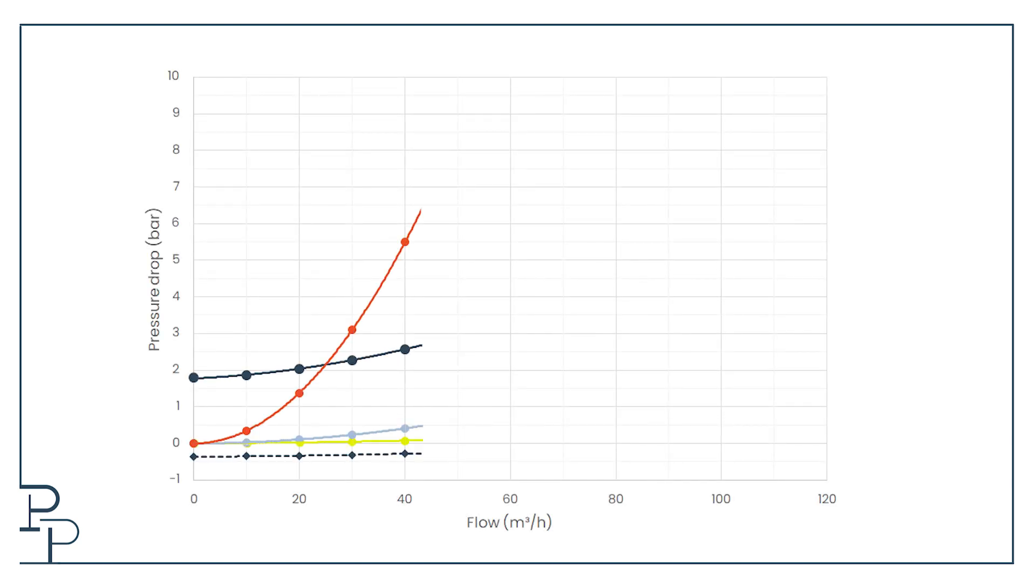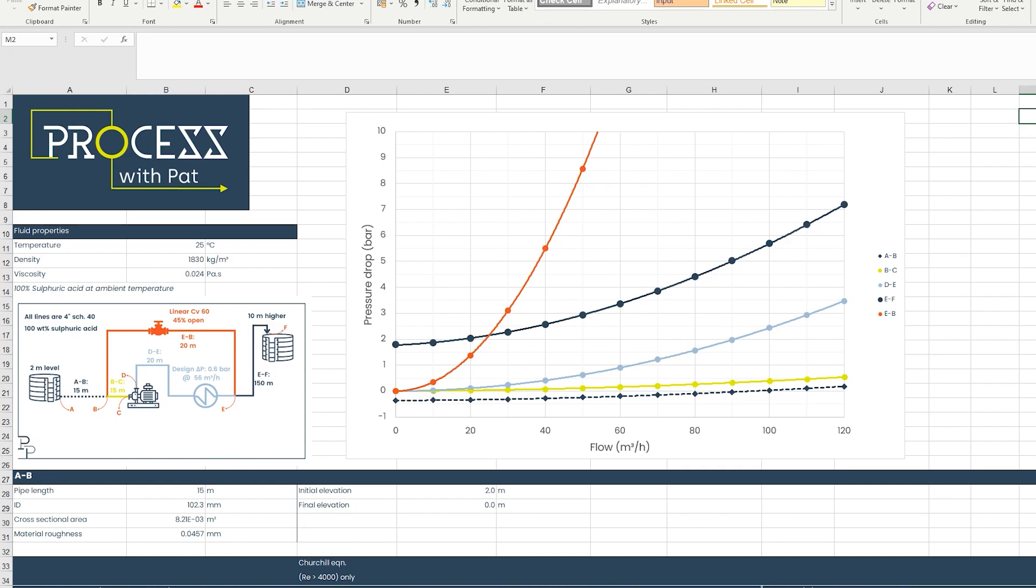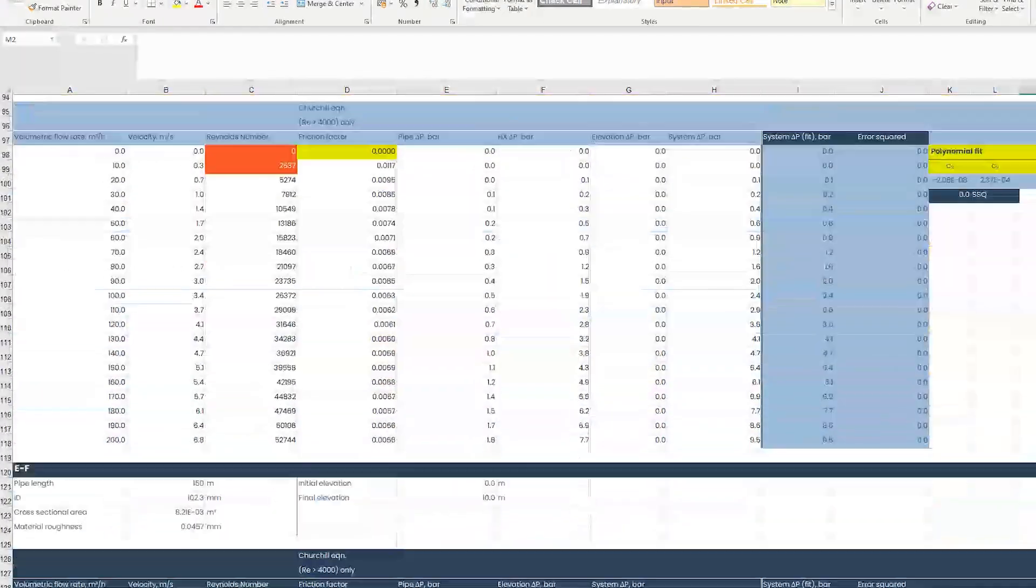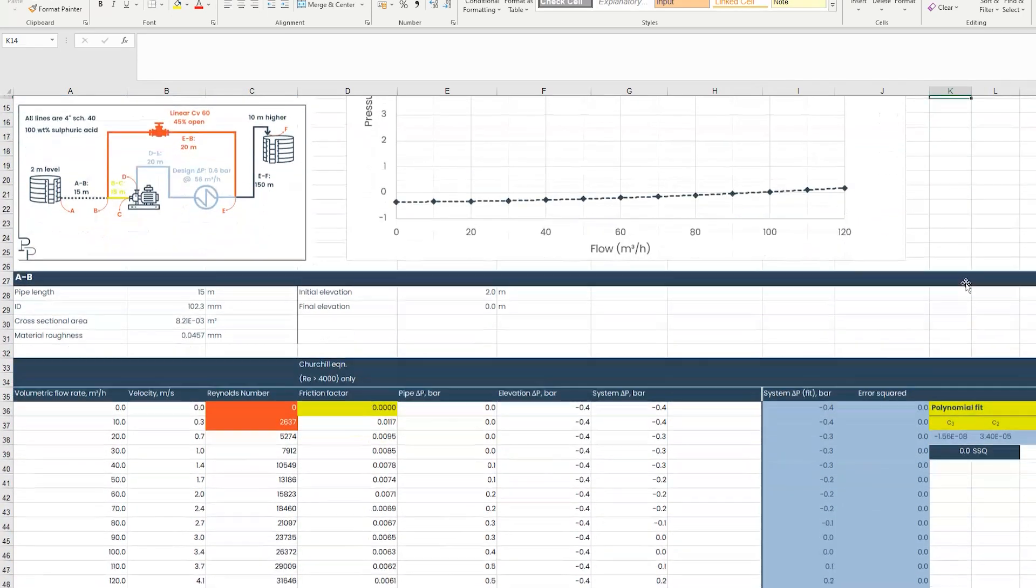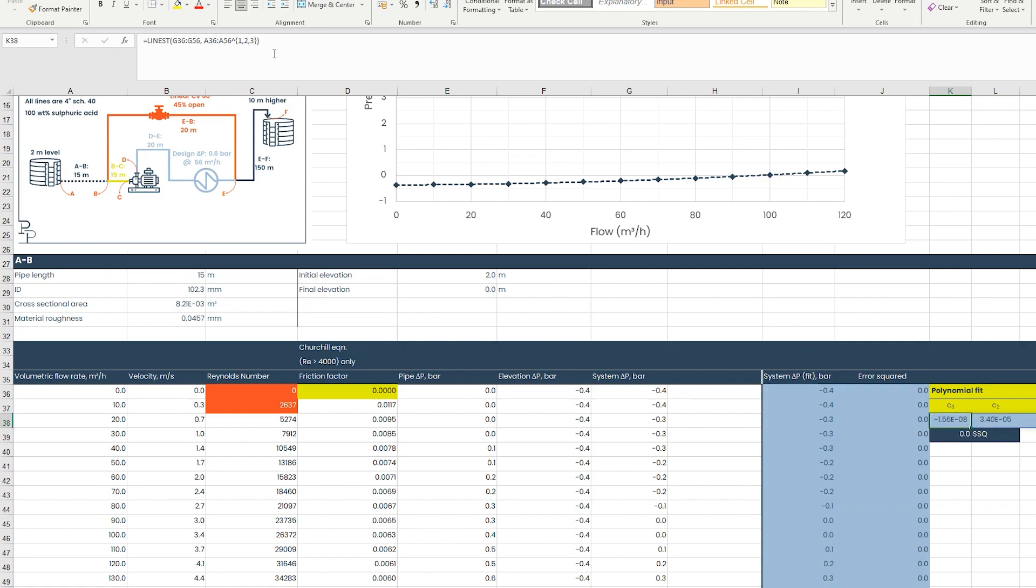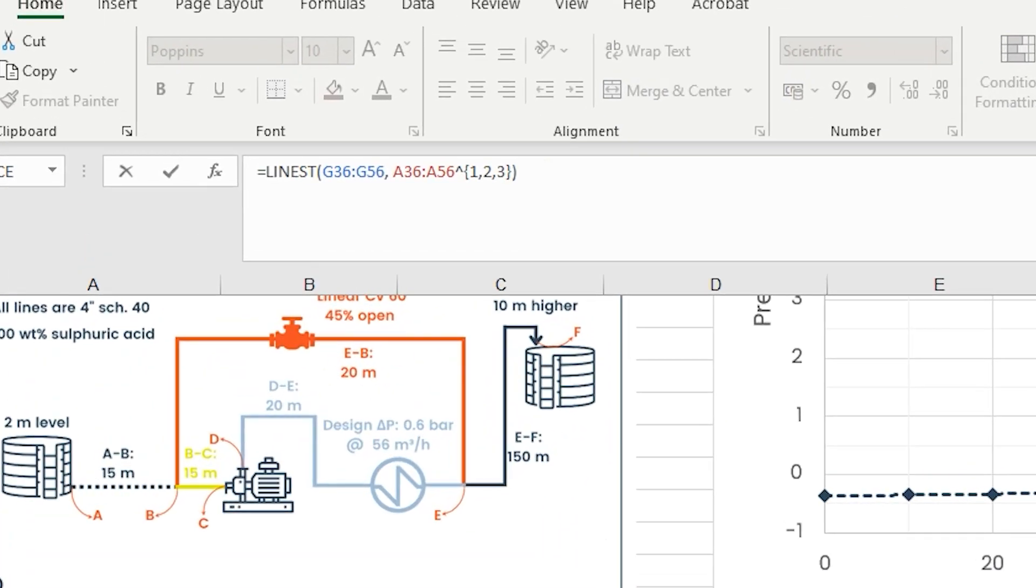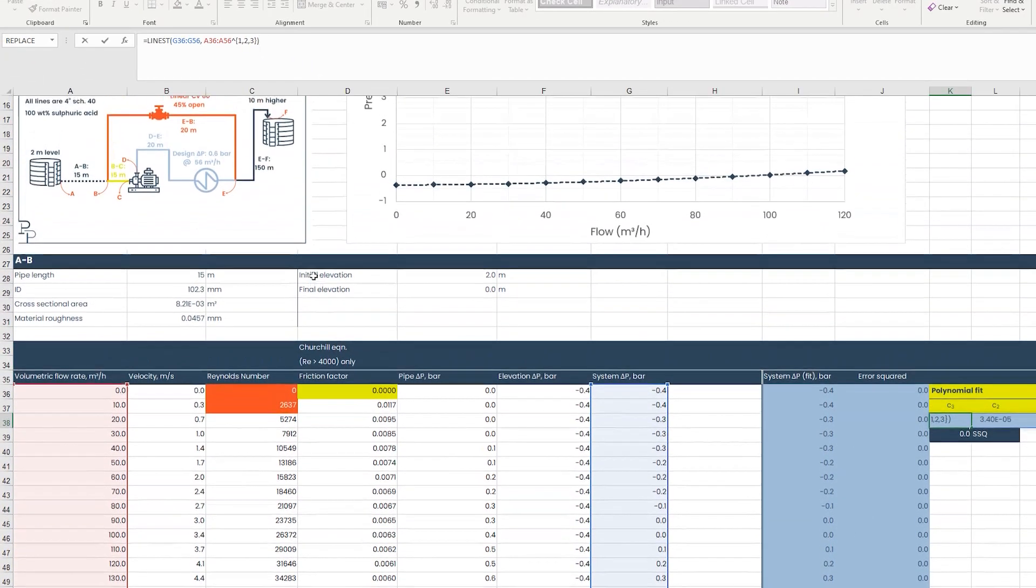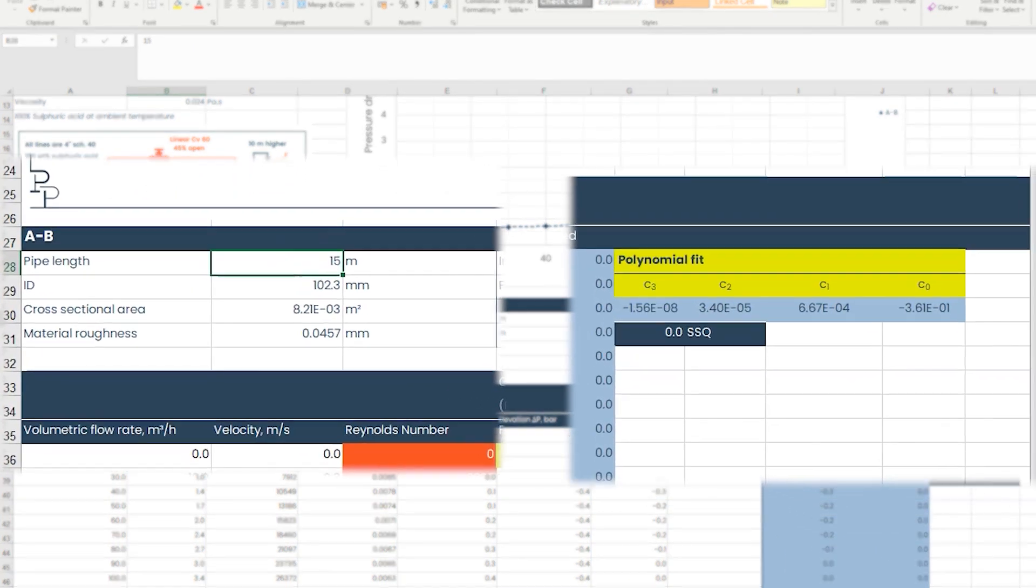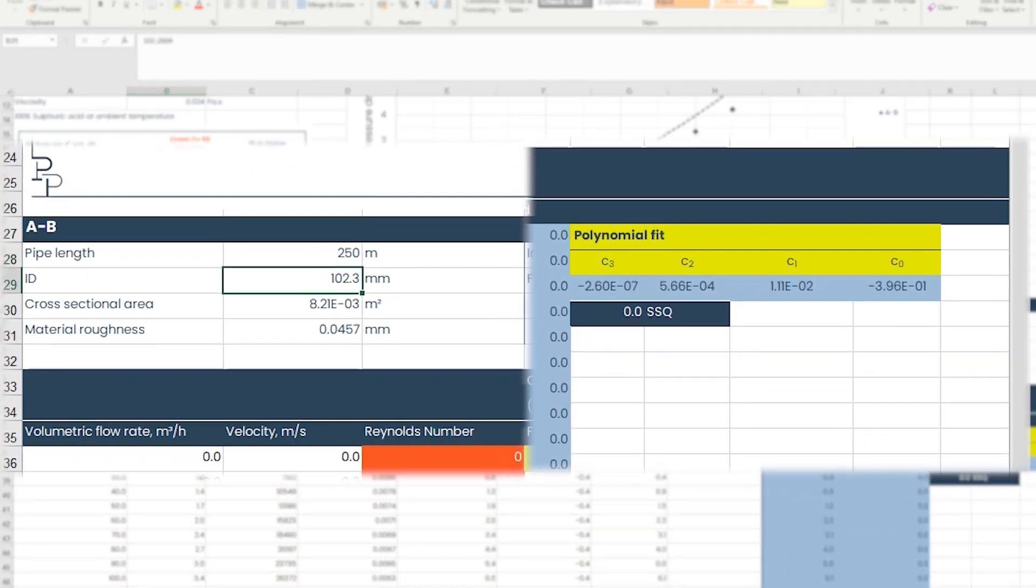Now I have my geometry and my fluid defined, I'm ready to start building system curves. Here I've got individual system curves for each of the sections we've just described. I'm hoping that if you've come this far, you don't need this explained to you. But if you do need help, you can get access to the file in the link in the description. One thing I like to do is use the line est function to automatically get the coefficients of any polynomial that's fitted to the system curve. That way if I change anything, the coefficients automatically get updated and I use those to calculate pressure drop elsewhere.